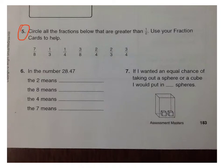Number 5. Circle all the fractions below that are greater than one-half. Use your fraction cards to help. We need ones that are greater than one-half. So if we've got a square divided into two, we need it to be bigger than one-half.